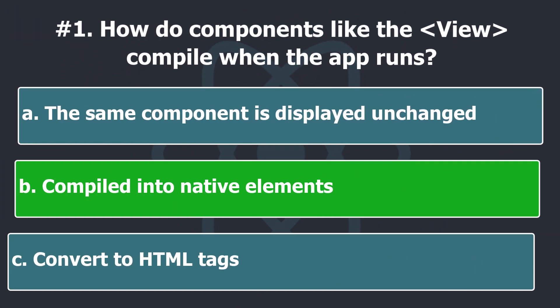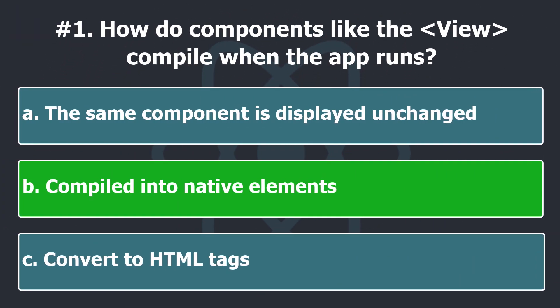For UI, React Native gives you special components which are then compiled to native views. For example, in React Native, we use the View tag, which acts like a div tag in HTML, and actually compiles into native widgets on Android and iOS.